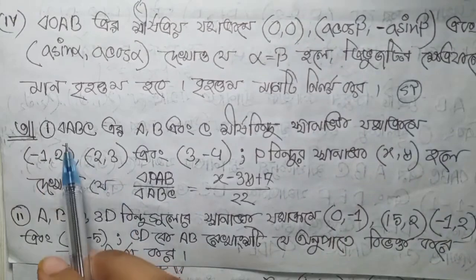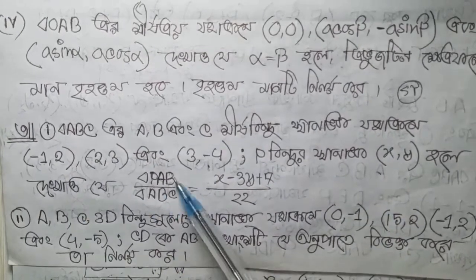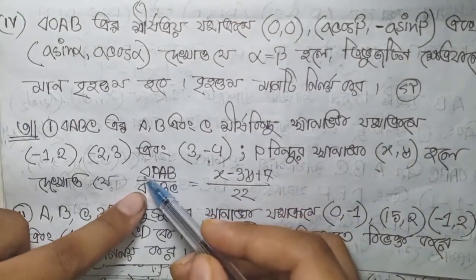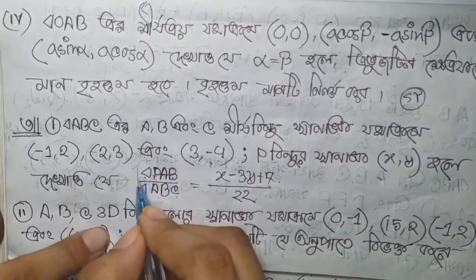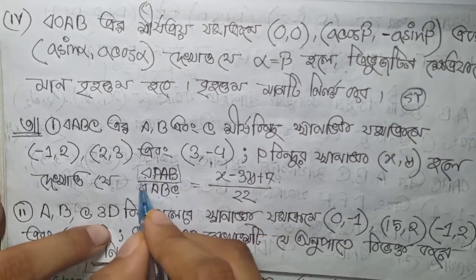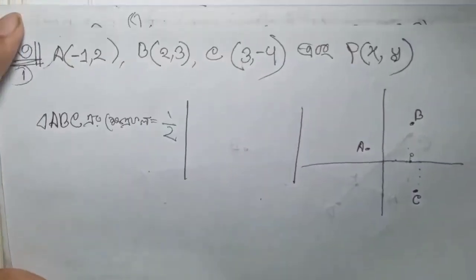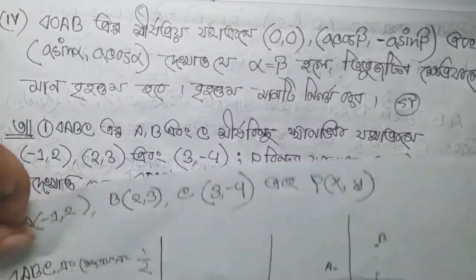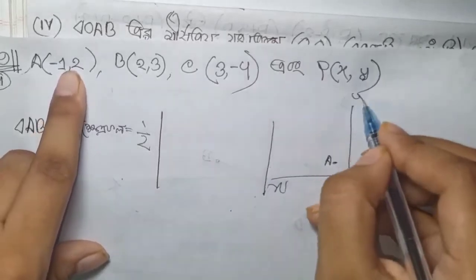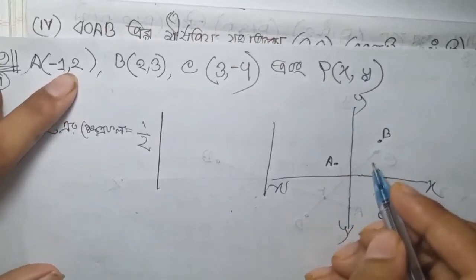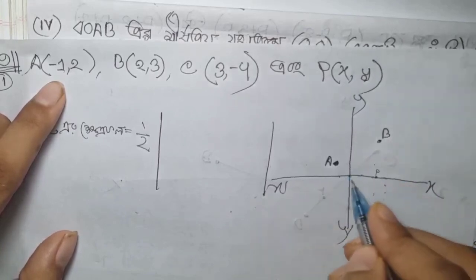This is the first question, which is the first question. This is the third question. Triangle PAB, triangle ABC. You can use a column for the term. So this is minus 1, 2. The term is minus 1, 2. This is the term.